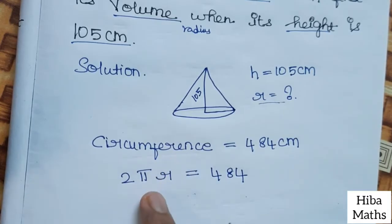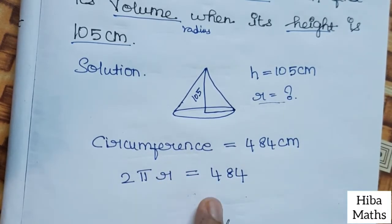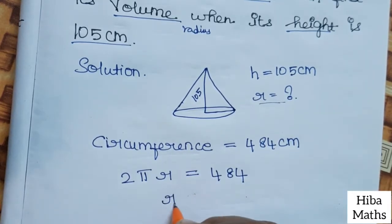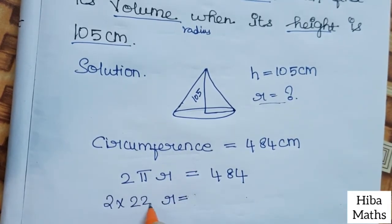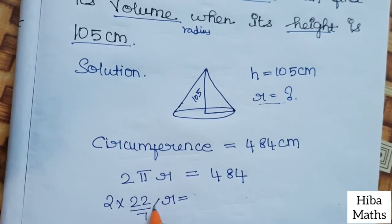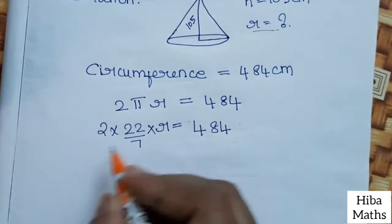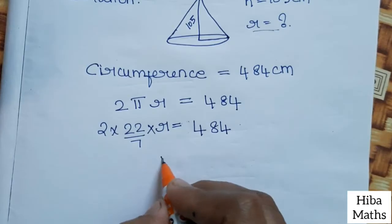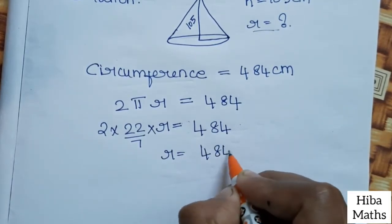The circumference formula is 2πr. We find the value of r: 2 × (22/7) × r = 484. Now, if r equals 484 divided by the denominator, we solve for r.